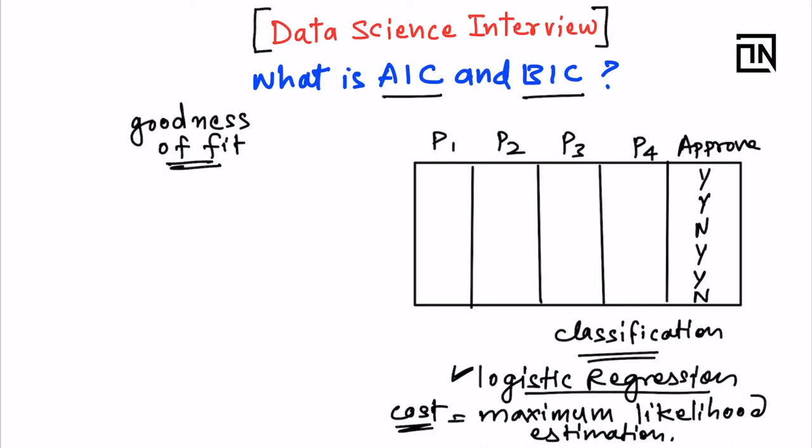In logistic regression what we try to maximize is this likelihood. So we select that model or those parameters, those coefficients of my equation, where my log likelihood is maximized.